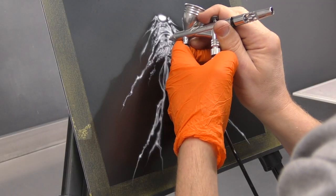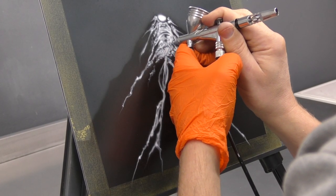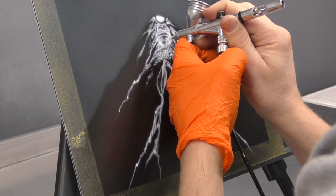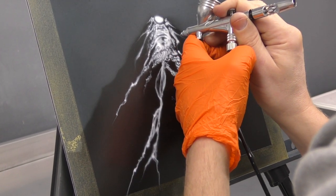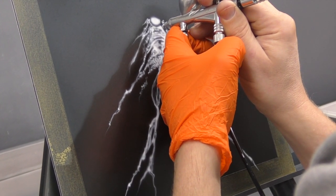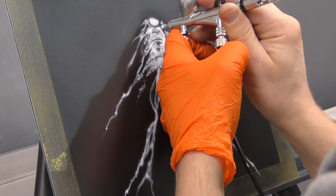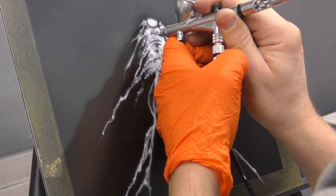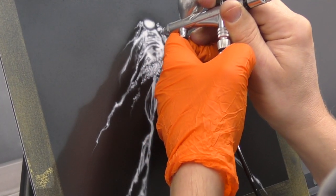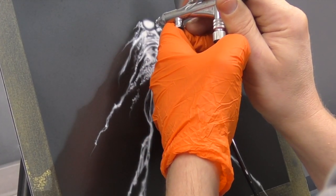Now going back in with the white in certain spots just to really brighten them up. To really create that hot spot. And the illusion that that lava is really glowing. Obviously at the moment it doesn't look anything like lava because we haven't got any of the colour in, but that's going to happen shortly.